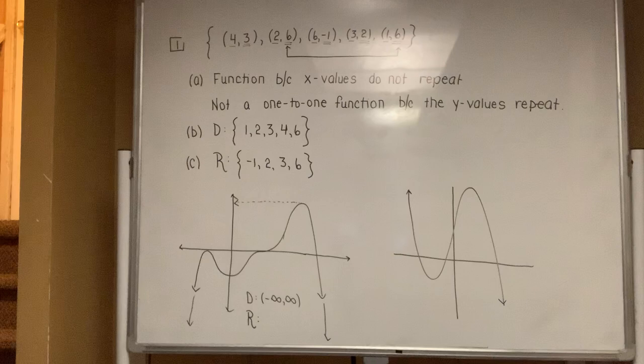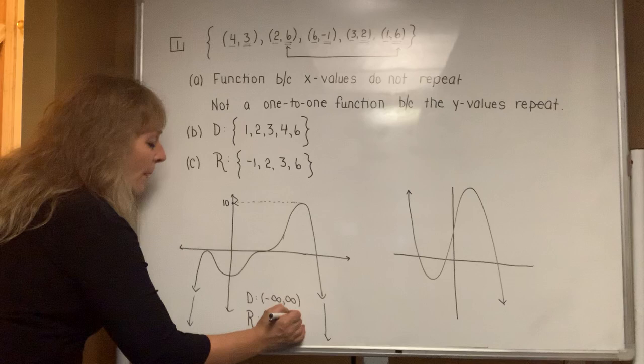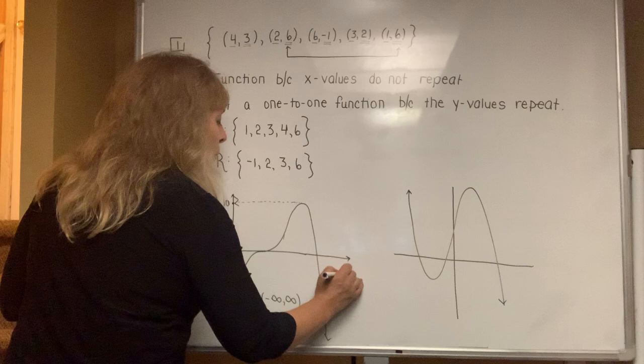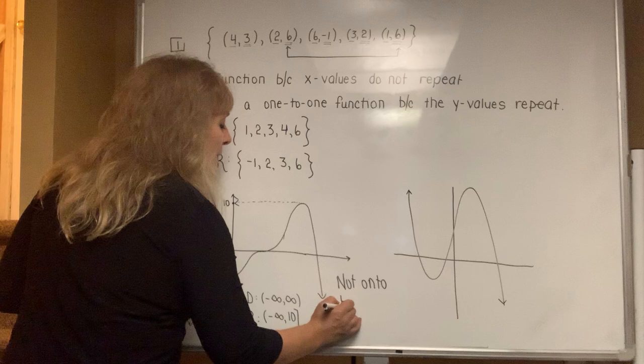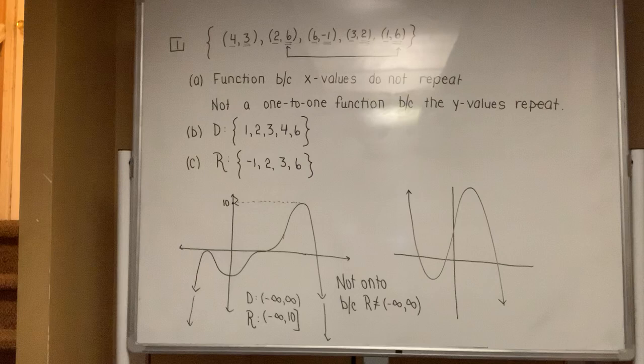So the range is all the way down here, all the way up to a max at whatever this y value is. So I don't know what it is. Let's pretend that this maximum value has a height of 10. That would mean that the range to this went from negative infinity all the way up to positive 10. Hit it, and that was it. This cannot be an onto function. So it is not onto. The reason why it is not onto is because the range is not negative infinity to positive infinity.